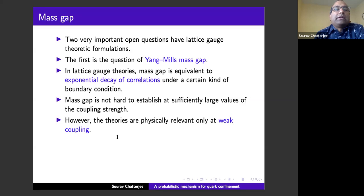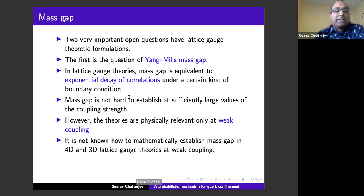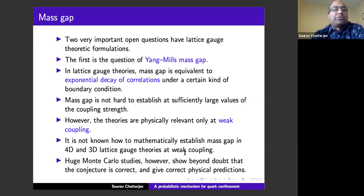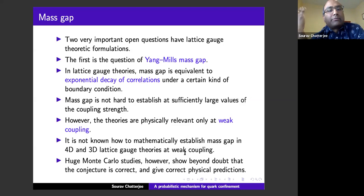It is believed that many lattice gauge theories in four dimensions have exponential decay in all regimes — no phase transition. But we don't know how to prove that in 4D or even 3D at weak coupling, which corresponds to low temperature. There are huge Monte Carlo studies showing this conjecture is correct and giving correct physical predictions. The exponents in exponential decay of correlations are associated with the masses of particles — that's what they want to predict.